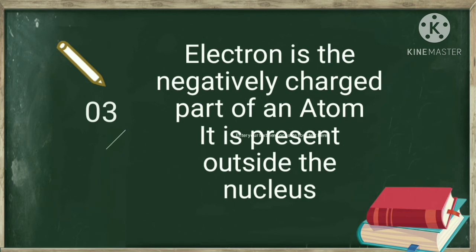And the final one is electron. It is the negatively charged part of an atom. Electrons are present outside the nucleus.